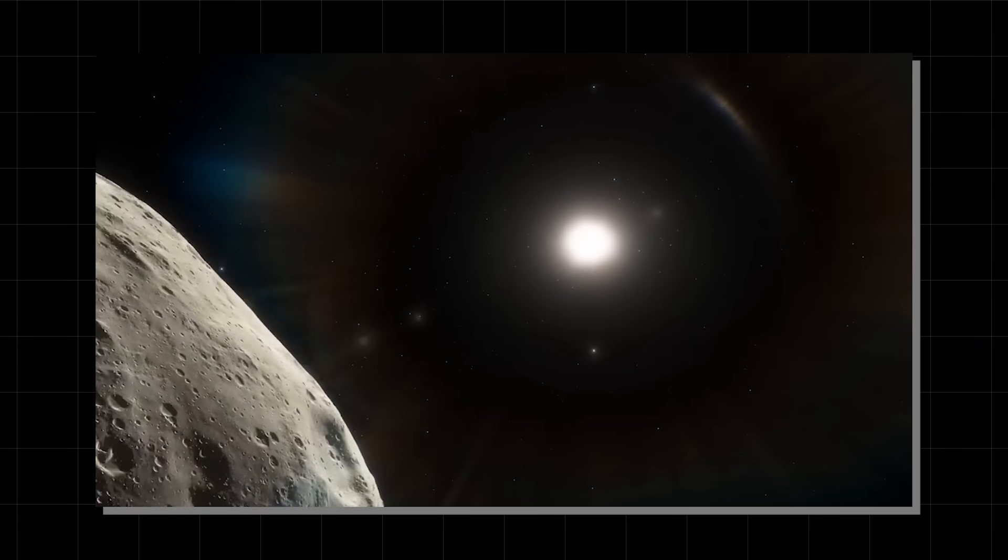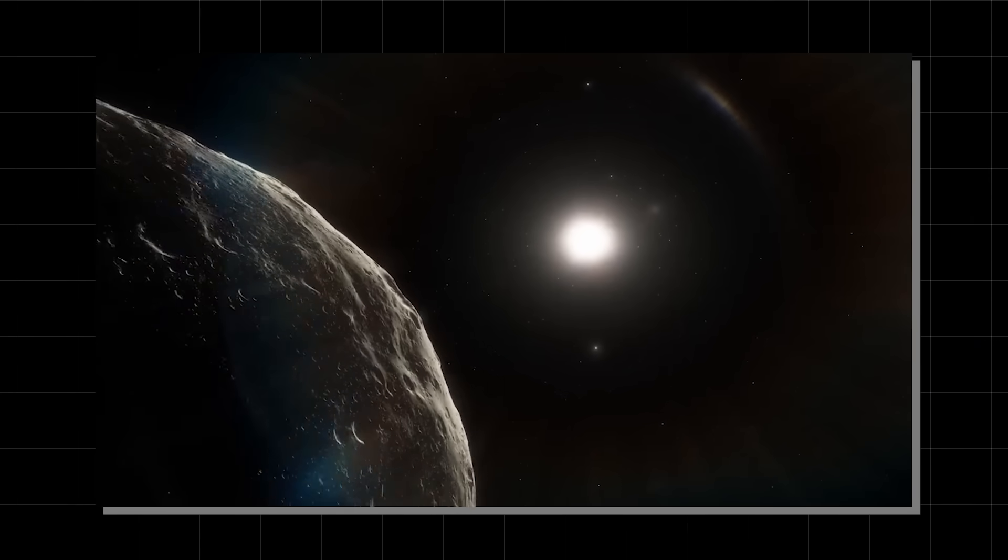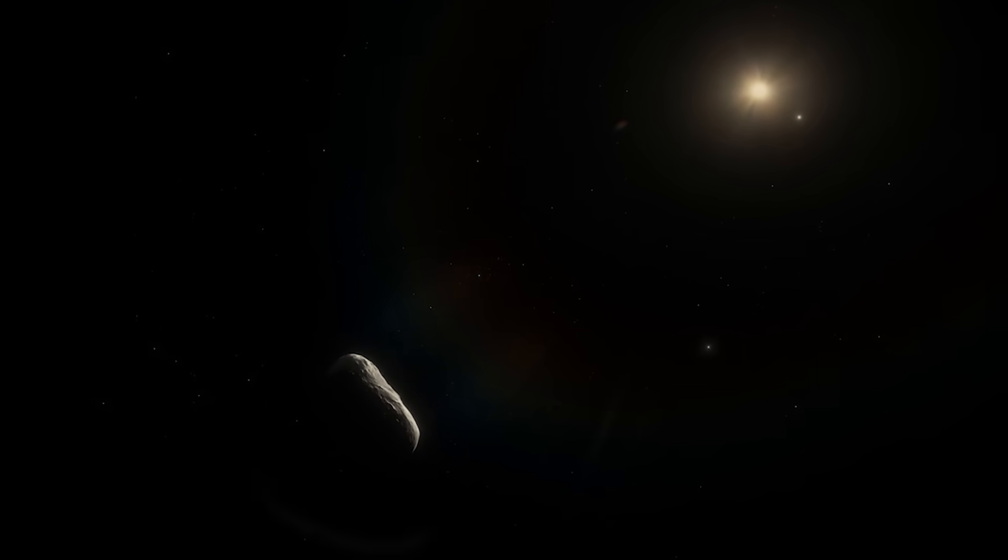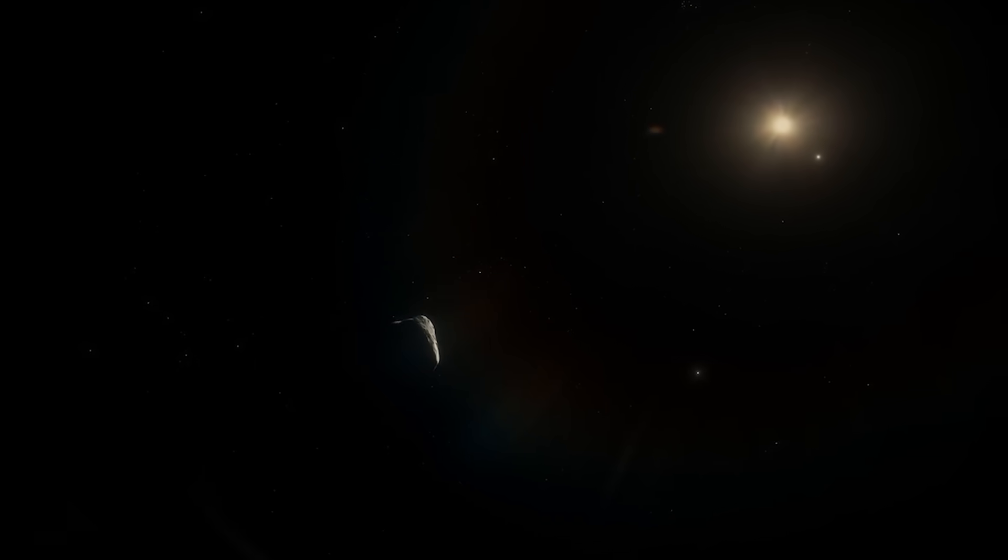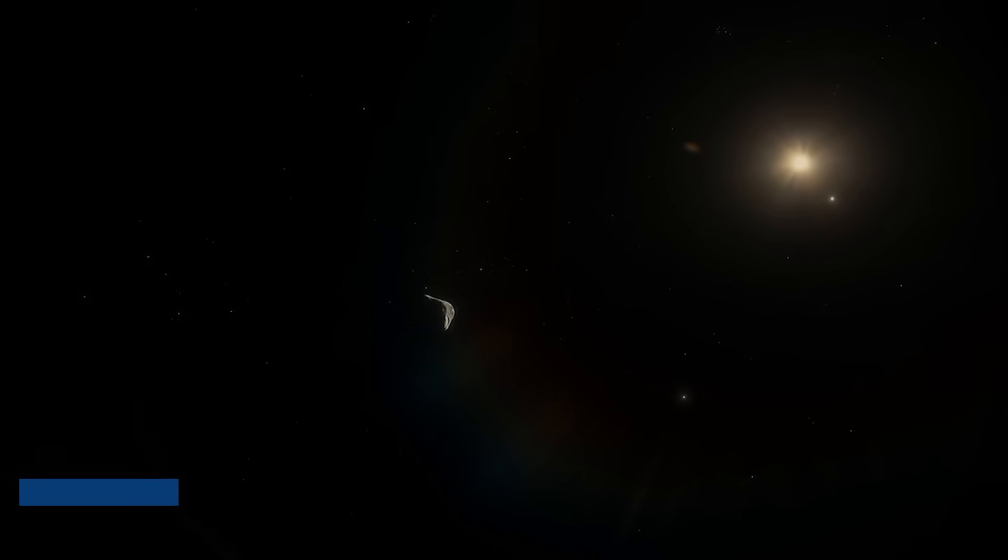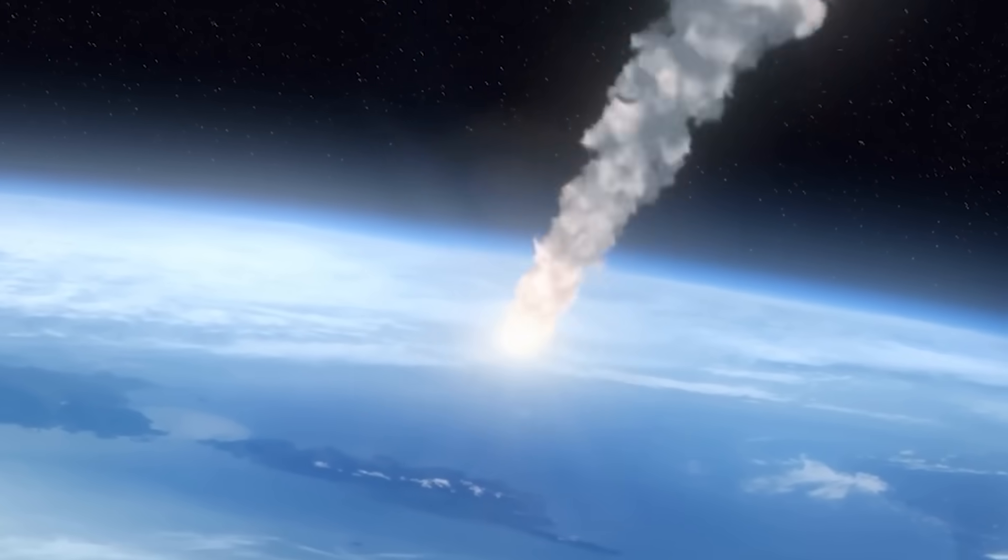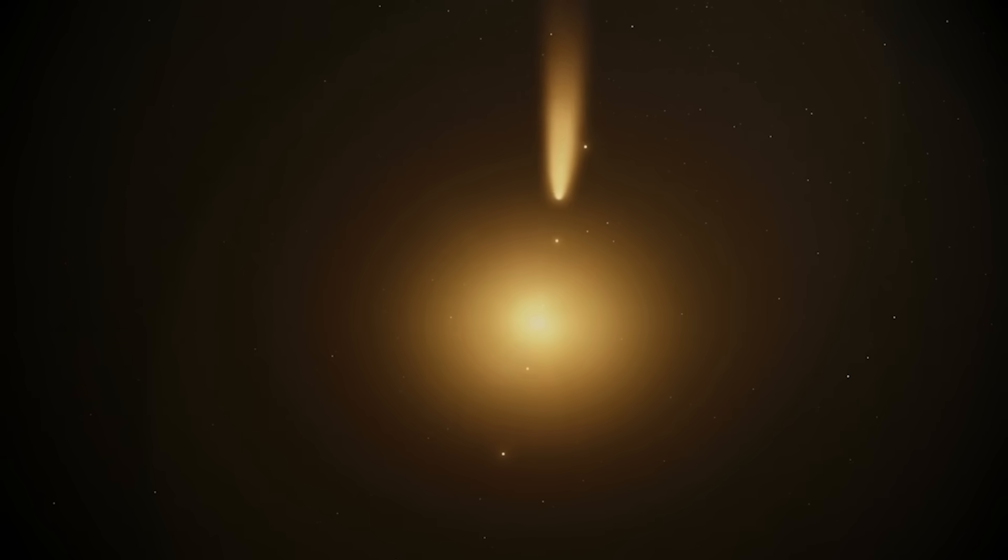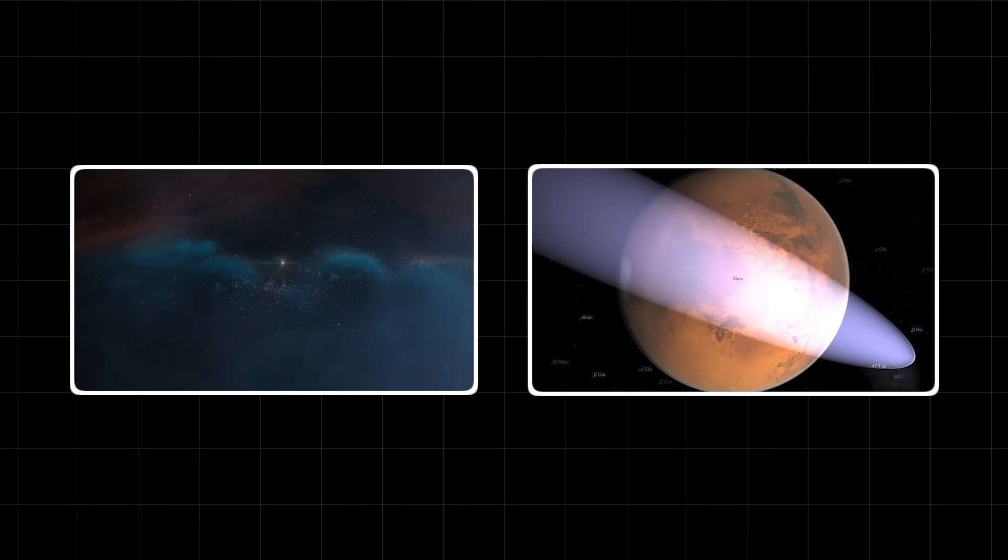The sheer scale of 3i Atlas is hard to comprehend. It is estimated to be several miles in diameter, a mountain of rock and ice hurtling through space at a speed of over 100,000 miles per hour. An impact from an object of this size would be catastrophic. The energy released would be equivalent to millions of nuclear bombs, creating a crater hundreds of miles wide and triggering a global dust storm that would enshroud Mars for years, possibly even decades.